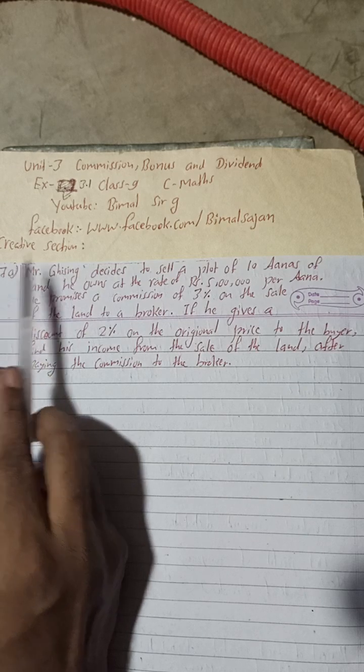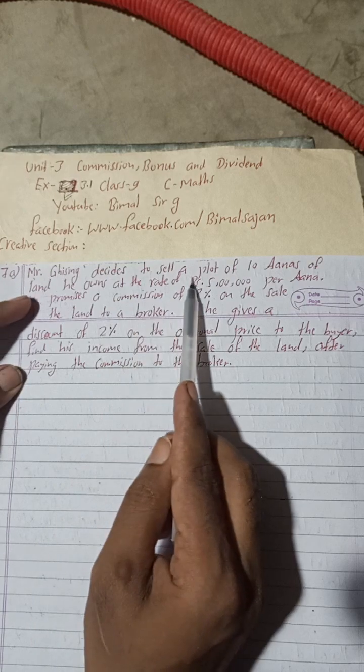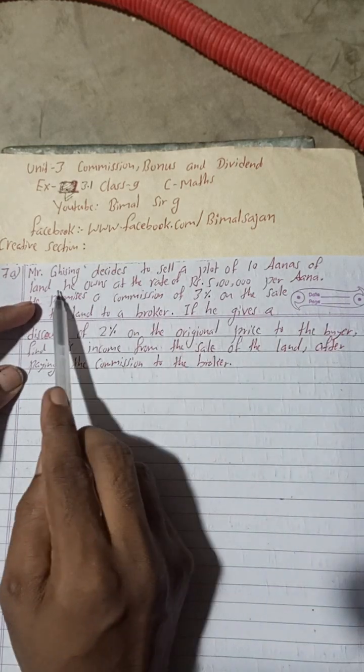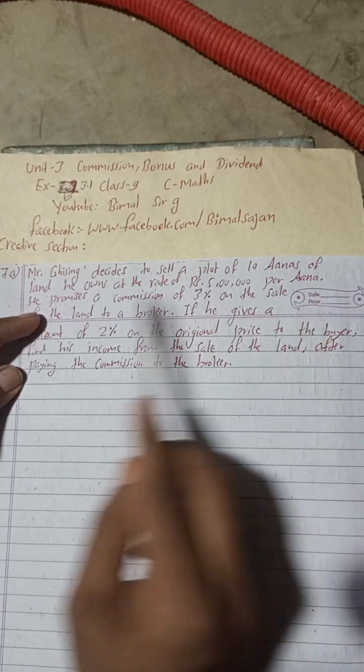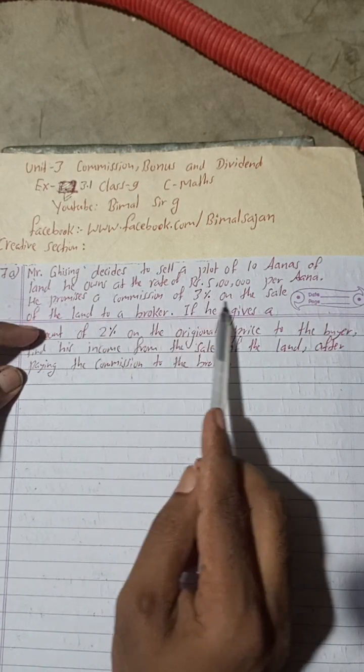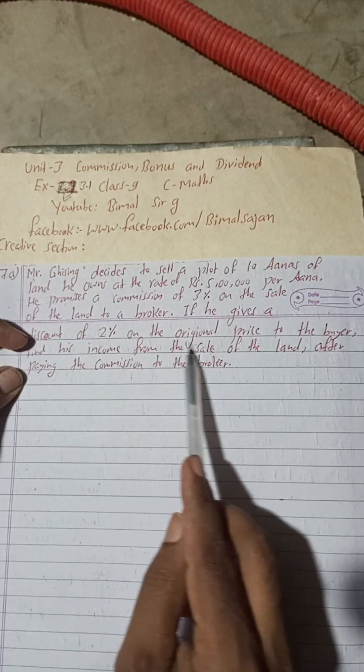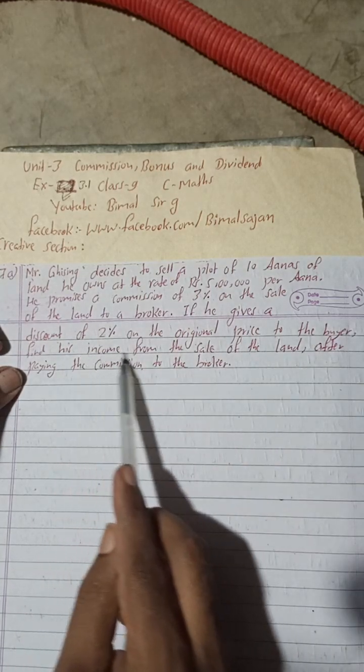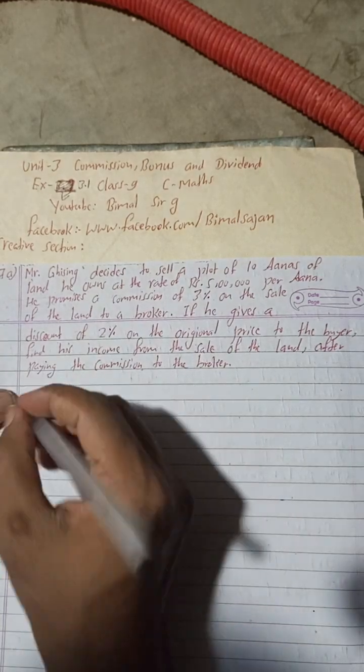So let's begin the solution and keep watching and keep supporting. Now 7A: Mr. Ghi Singh decides to sell a plot of 10 anas of land he owns at the rate of Rs 5 lakhs per ana. He promises a commission of 3% on the sale of the land to a broker. If he gives a discount of 2% on the original price to the buyers, find his income from the sale of the land after paying the commission to the broker. Solution.